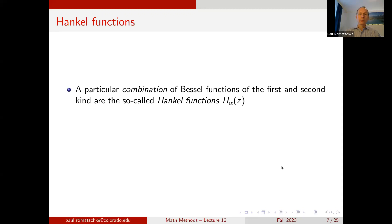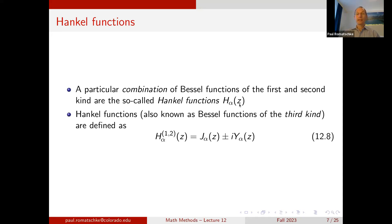There is also a third type of Bessel functions, the so-called Hankel functions, denoted H_α(z). These are essentially combinations of J_α and Y_α with a plus or minus i for the Y_α term. One denotes these as H_α^(1) and H_α^(2), where (1) corresponds to the plus sign and (2) to the minus sign. These are sometimes also called Bessel functions of the third kind.